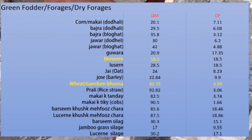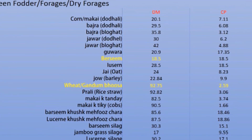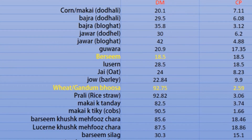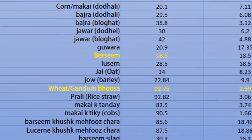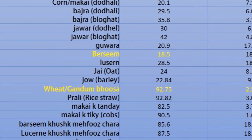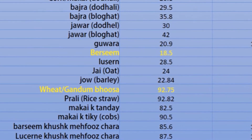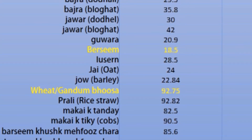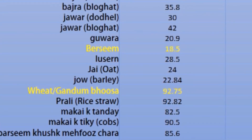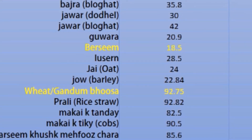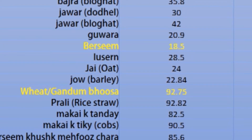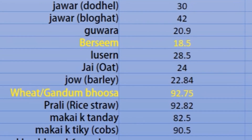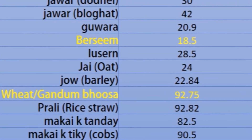To calculate dry matter intake, we need data on the dry matter content of each feedstuff. Here is a table showing values: corn at milk stage is 20.1%, bajra (millet) is 29.9%, chawar (sorghum), quara, berseem, lucerne, oat, barley, wheat straw, rice straw, and many others. You can find these dry matter values in any feed composition book or table.